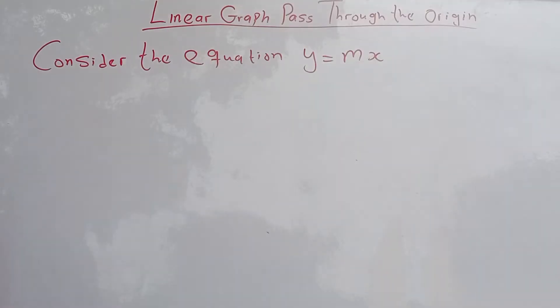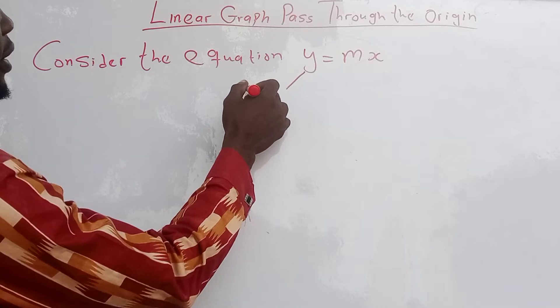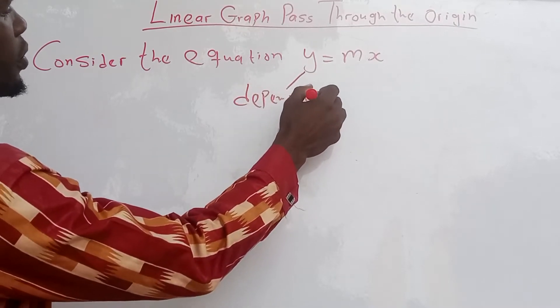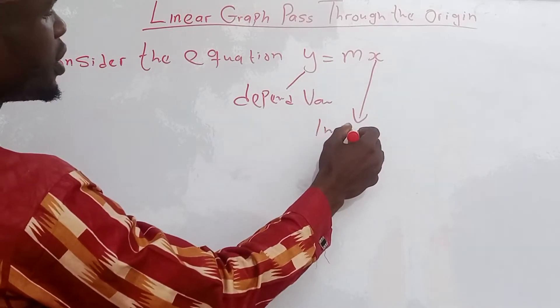This equation has two types of variables: dependent and independent variables. Y is the dependent variable, and X is the independent variable.